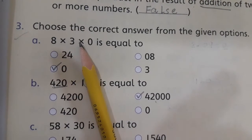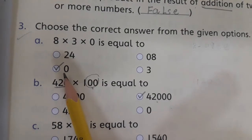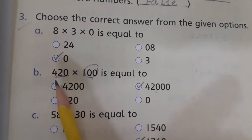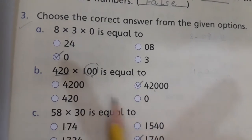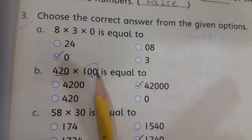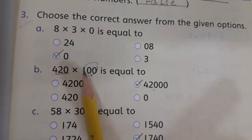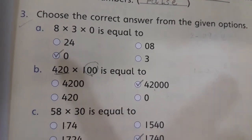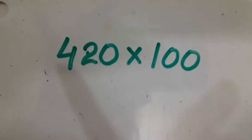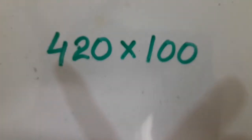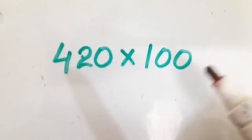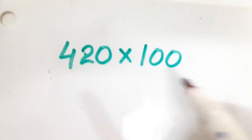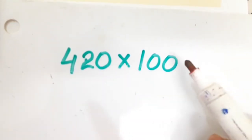So students, in this way when we multiply 8 × 3 × 0, we get 0 as our answer. Now Part B: 420 multiplied by 100 is equals to — these are the options. First of all we will multiply both of these numbers and then we will see which is our answer. As I told you in my previous lecture, whenever we multiply any digit with 10, 100, or similar numbers...